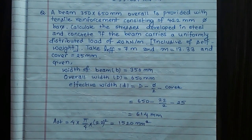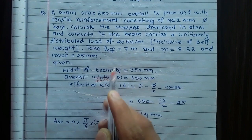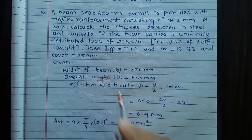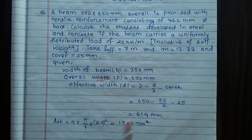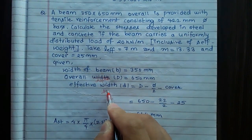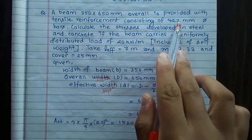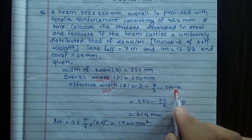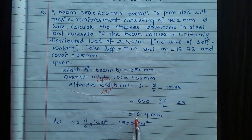Given: width of beam B = 350 mm, overall depth = 650 mm. Effective depth D = overall depth - diameter/2 - cover = 650 - 22/2 - 25 = 614 mm.